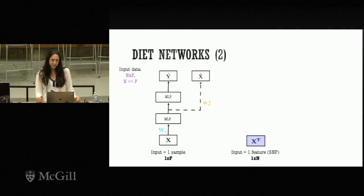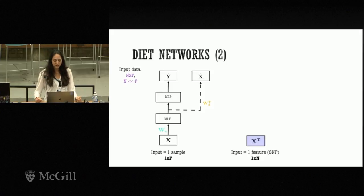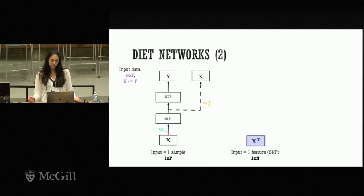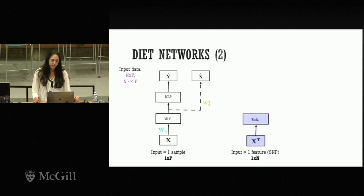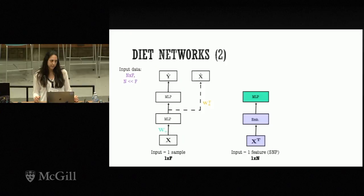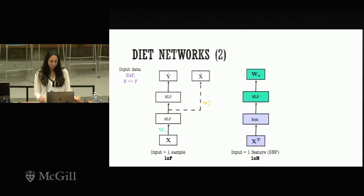To reduce the parameter explosion, we tie these parameters to an auxiliary network. The auxiliary network takes as input not one sample but one feature — all values of one particular SNP across all training populations. This transposes the data matrix, giving us many more examples. We can either handcraft or learn an embedding such that two SNPs that are similar under some circumstances end up with similar feature representations, which are then used as weights.